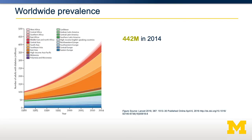If we zoom out to worldwide prevalence, in 2014, 442 million people had type 2 diabetes. This is an increase of four-fold since 1980, and these numbers have continued to increase since 2014.